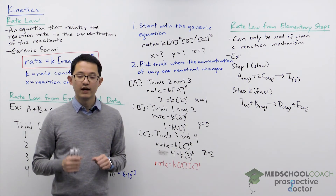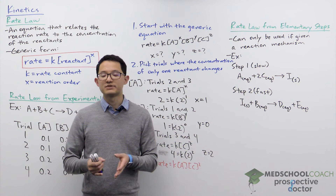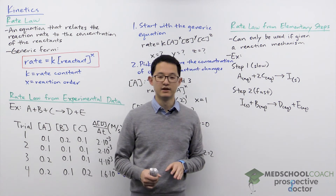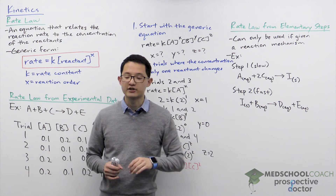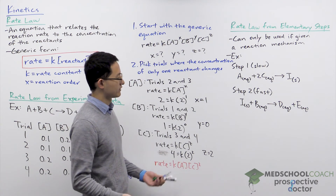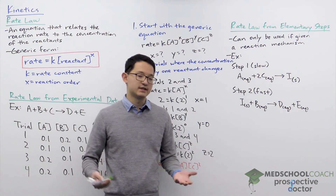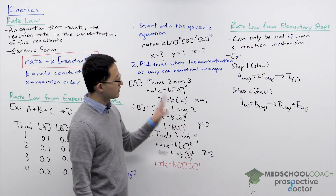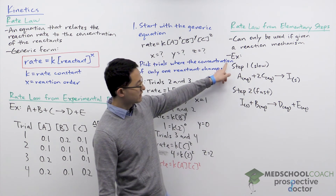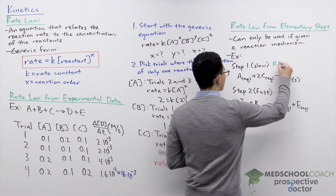Another way to determine the rate law is using elementary steps, which describe the individual steps actually occurring during the reaction. You know it's an elementary step if you're given a reaction mechanism — only use this approach when given a mechanism, not an overall reaction. For a multiple-step reaction, they'll often indicate which step is slower and which is faster; the slow step is the rate-determining step.